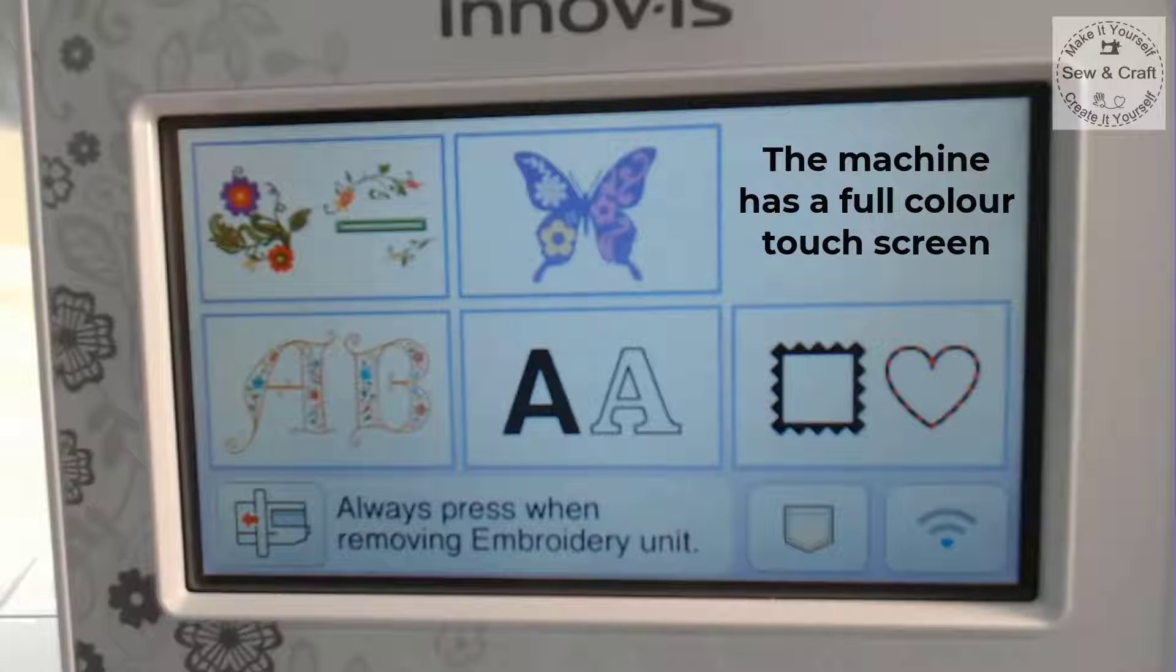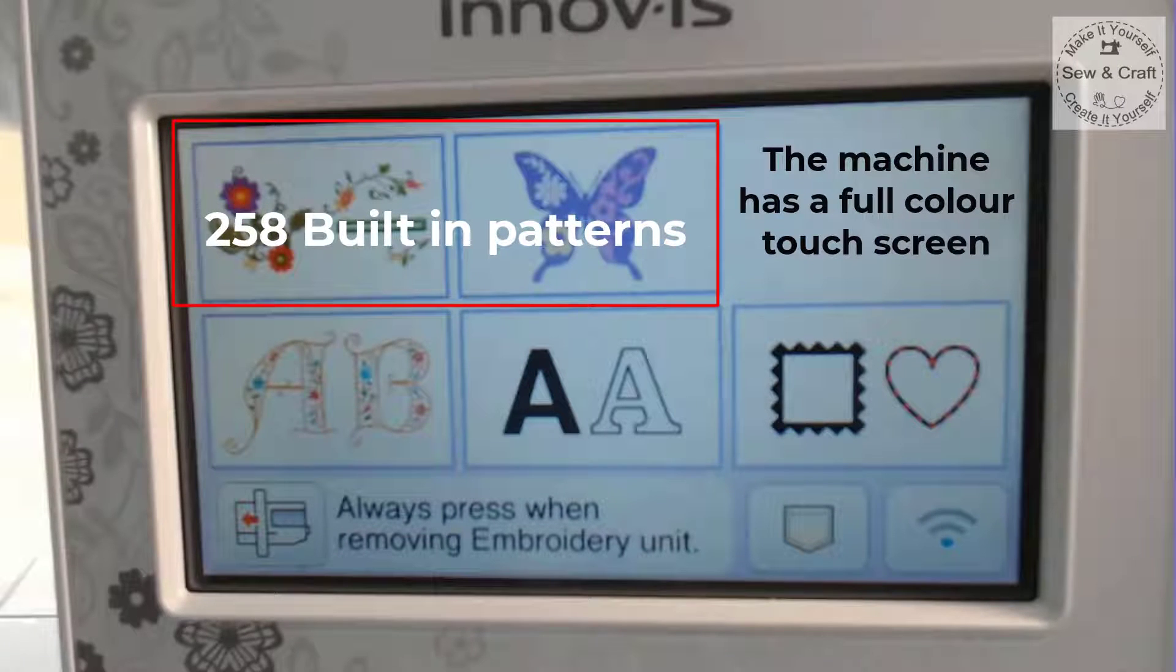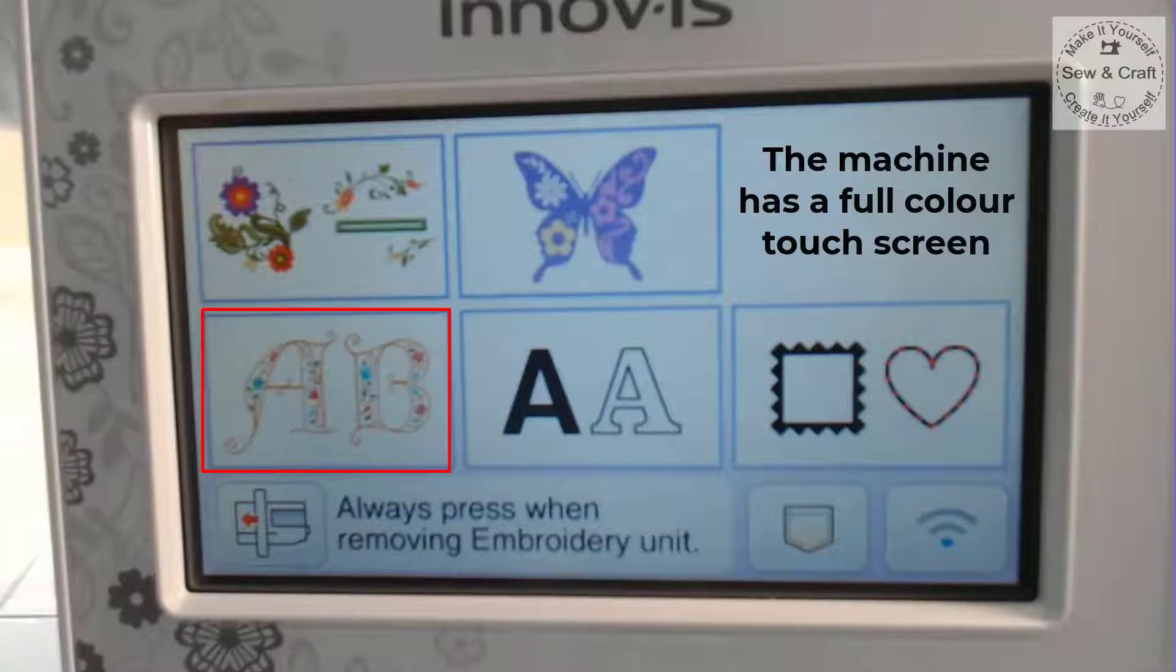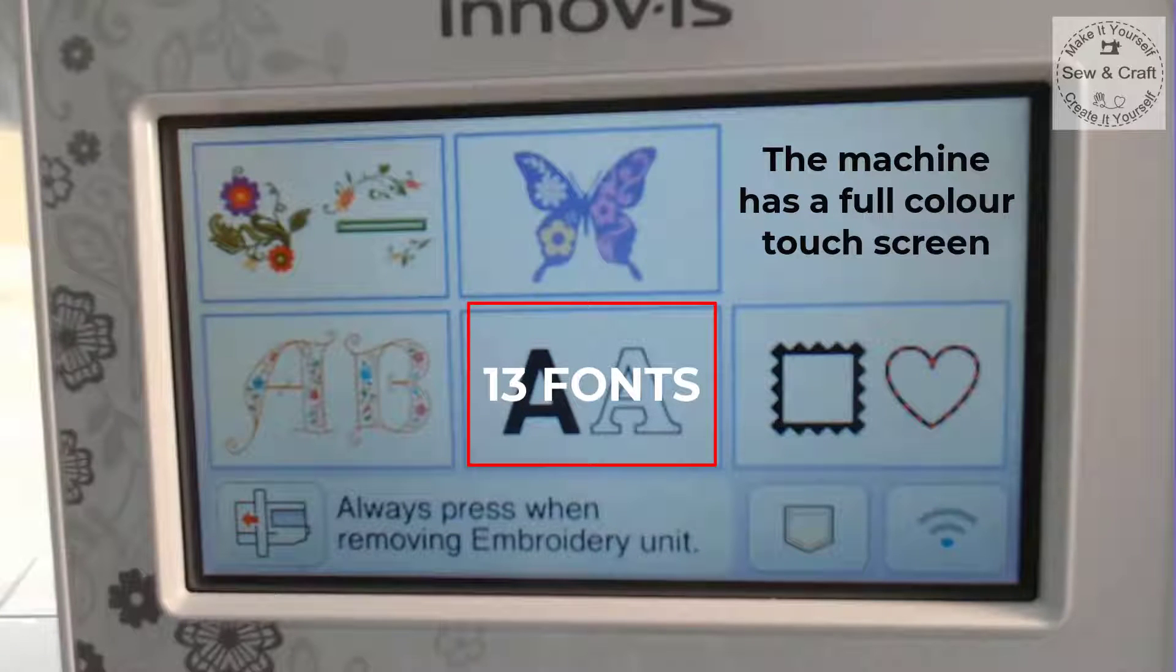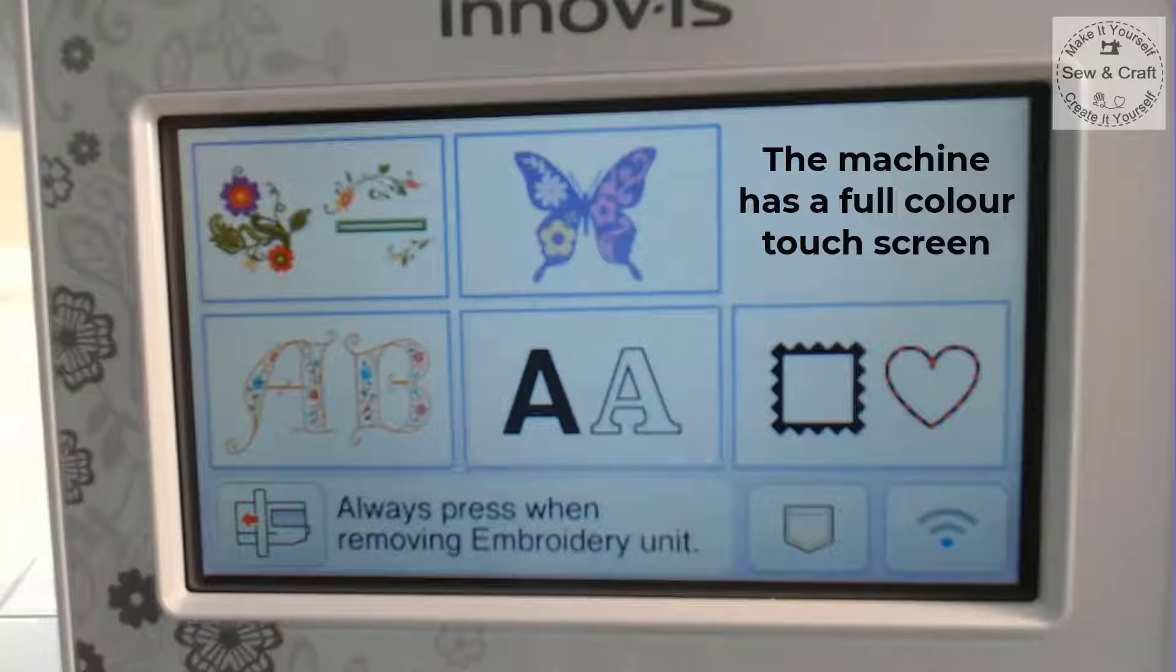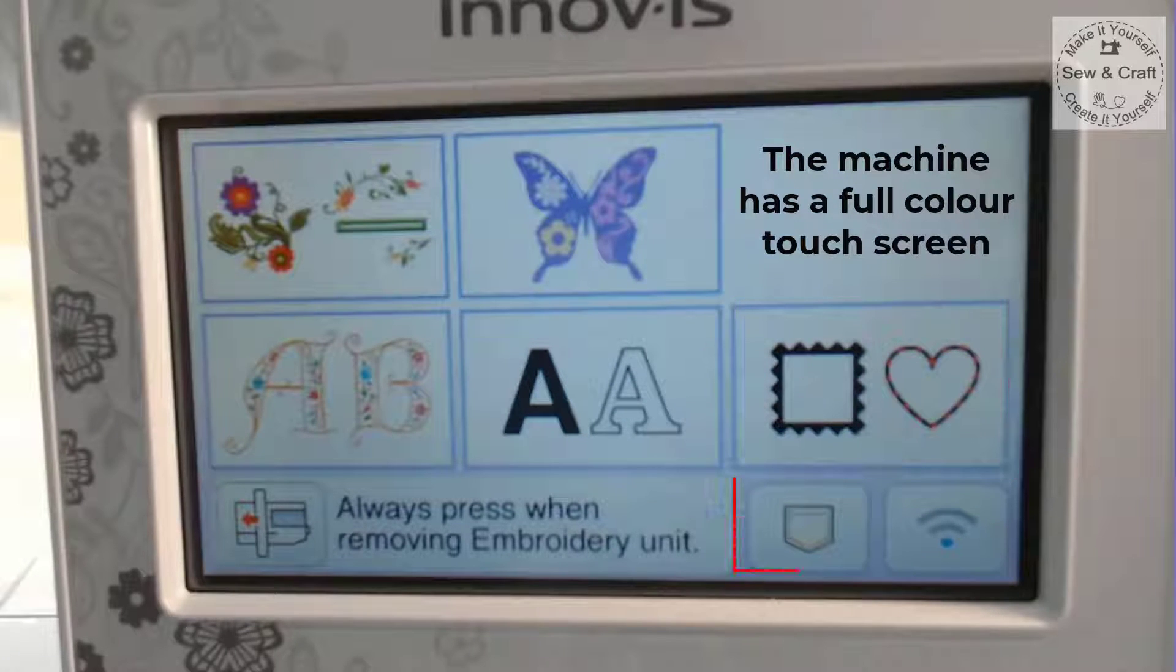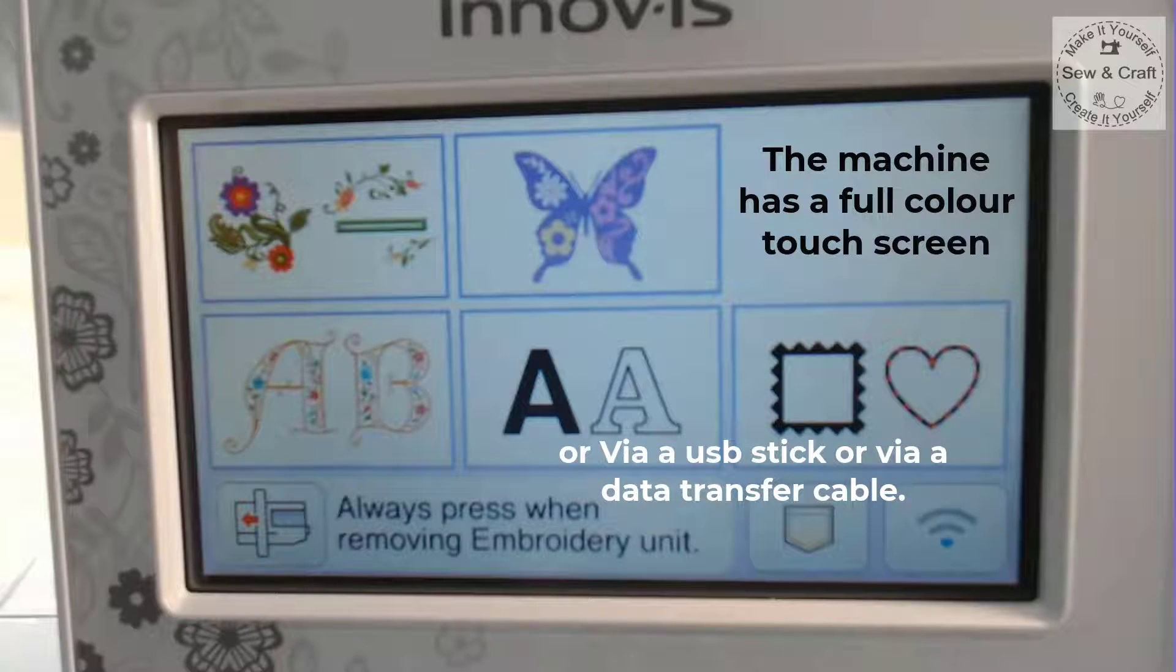The machine has a full color touch screen with 258 built-in patterns, an extra large monogram set, 13 built-in fonts and 140 frame combinations. You can save your favorite designs onto the machine and transfer designs wirelessly as well as via a USB stick or a cable connected to your PC.